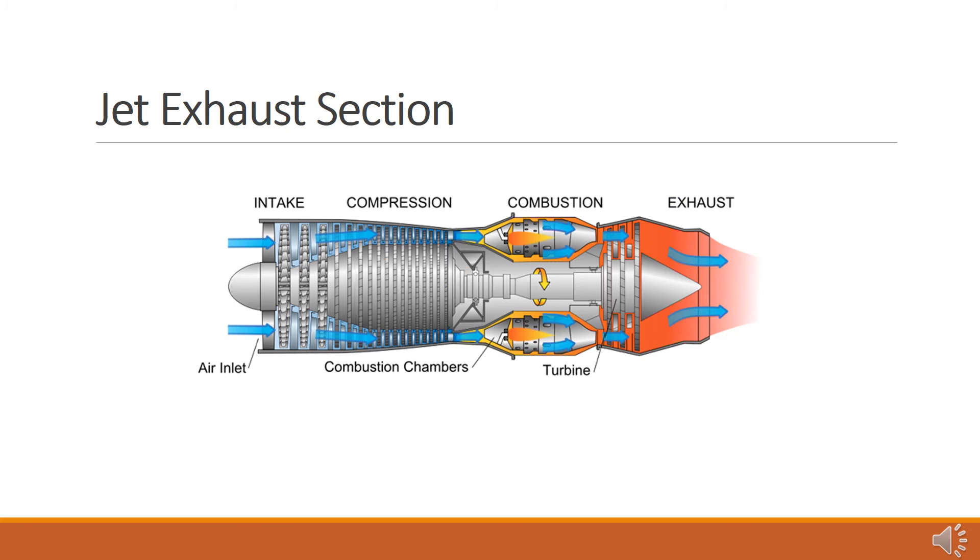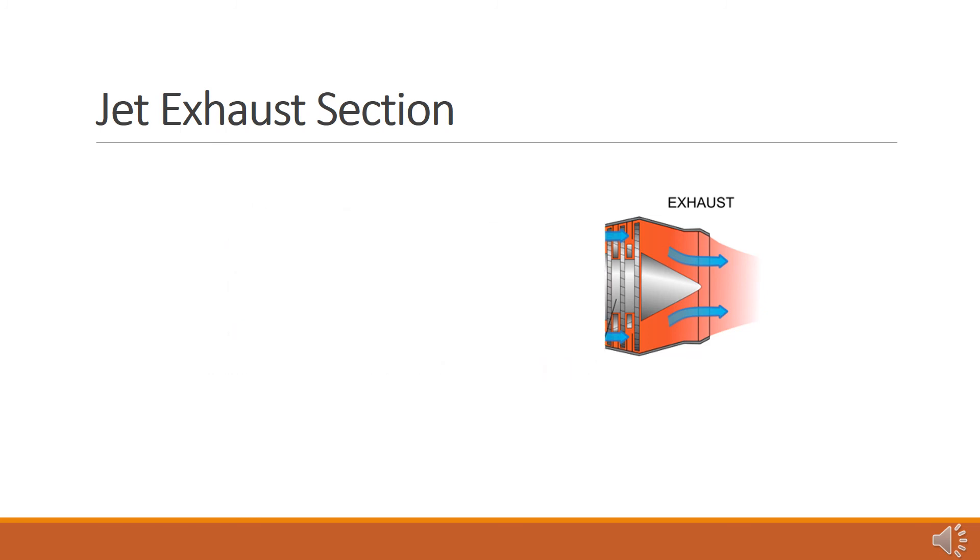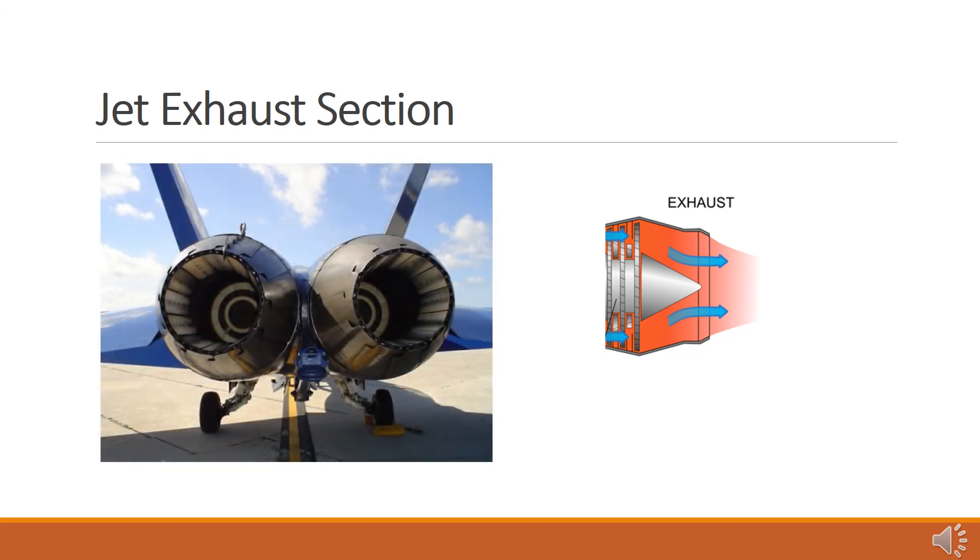Turbine exhaust gases pass through the propelling nozzle or exhaust to produce a high velocity jet. Energy available in the gas turbine exhaust is converted into a high speed propelling jet by the nozzle. Propelling nozzles accelerate the available gas to subsonic, transonic, or supersonic velocities depending on the power setting of the engine, their internal shape, and the pressures at the entry to and exit from the nozzle.